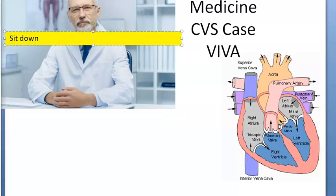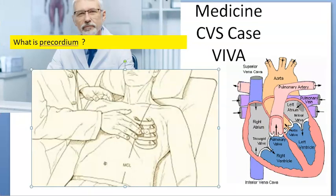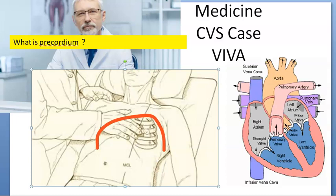So good morning sir. Sit down. What is precordium? Precordium is the anterior chest wall which overlies the heart. It is usually convex. It can be bulged if there is any long duration cardiac disease, if there is any tumor, if there is pericardial effusion or pleural effusion. It can be flat if there is some fibrosis of the lung, some congenital heart deformity, or if there is some adherent pericarditis.